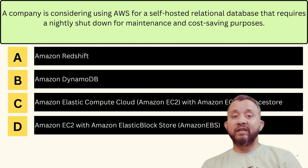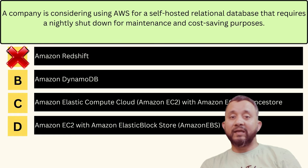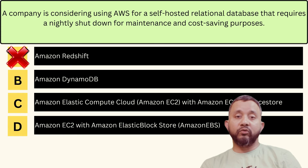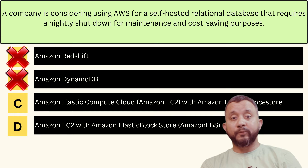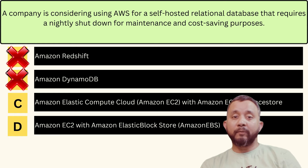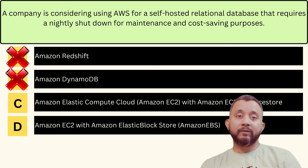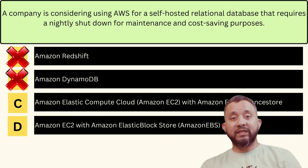The question is: 'A company is considering using AWS for a self-hosted relational database that requires a nightly shutdown for maintenance and cost-saving purposes.' I can easily eliminate Amazon Redshift because Redshift is not a database — it's a data warehouse solution. I can also eliminate Amazon DynamoDB because DynamoDB is not a relational database; it's a NoSQL database model. By eliminating these two options I increase my chances of getting the correct answer by 50%.